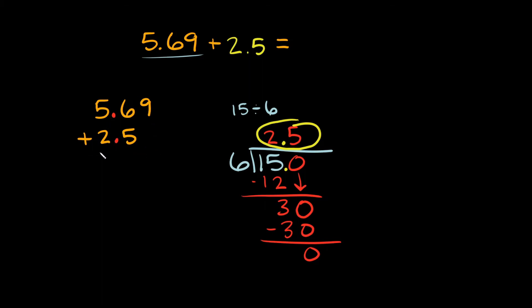So, now that they're lined up properly, now we can add these. So, 9 plus nothing is just 9. And then here we have 6 plus 5, which is 11. So, we'll put a 1 there and carry the other one up there. And then here we have 5 plus 2, which is 7. And then 7 plus 1 is 8, right?